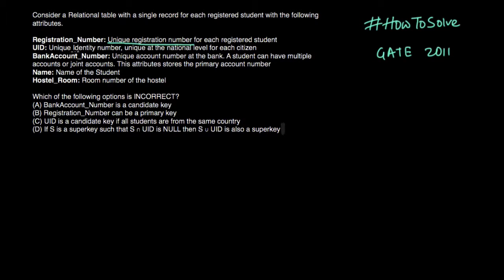Now UID. UID is unique identity number and unique at the national level. So it is unique at national level. So if users are from same country then it will be unique.